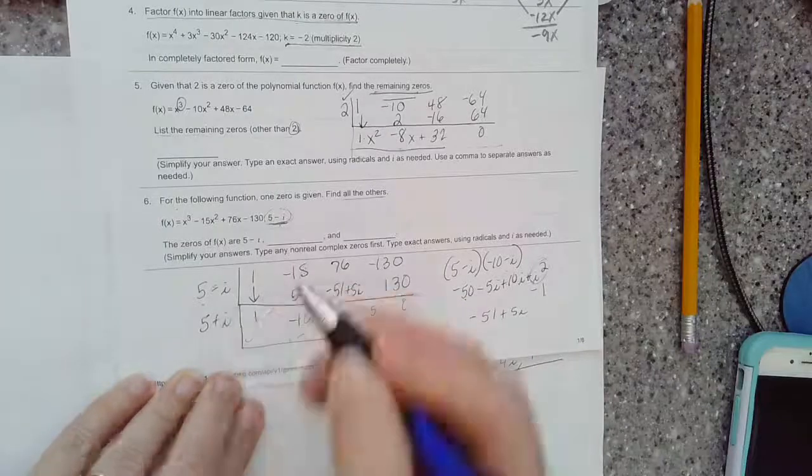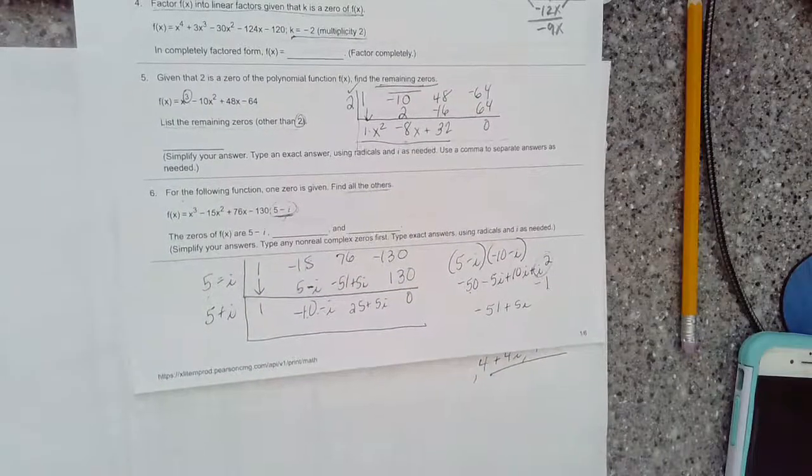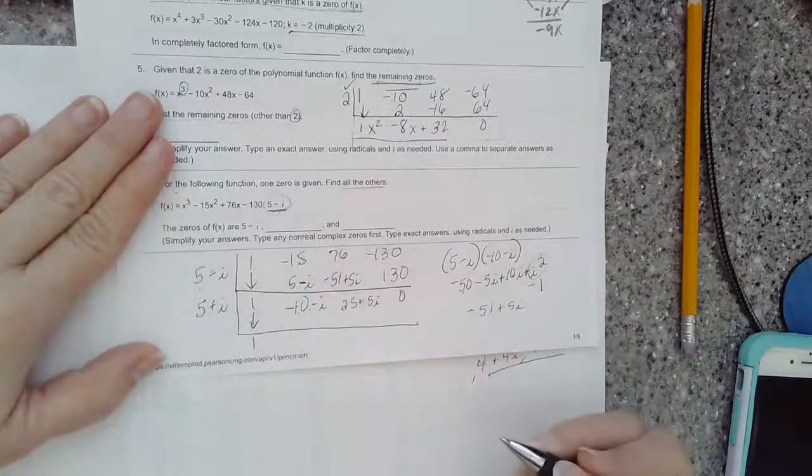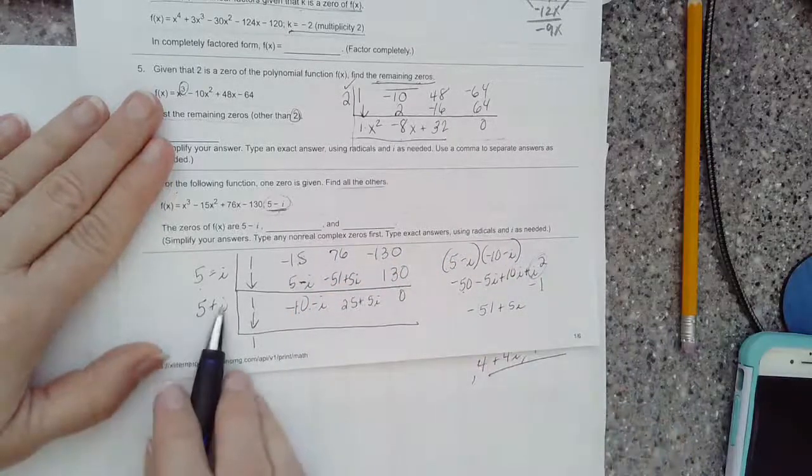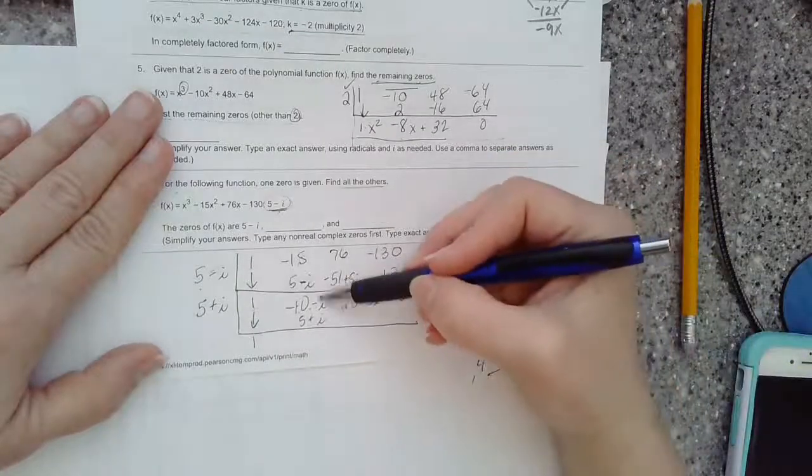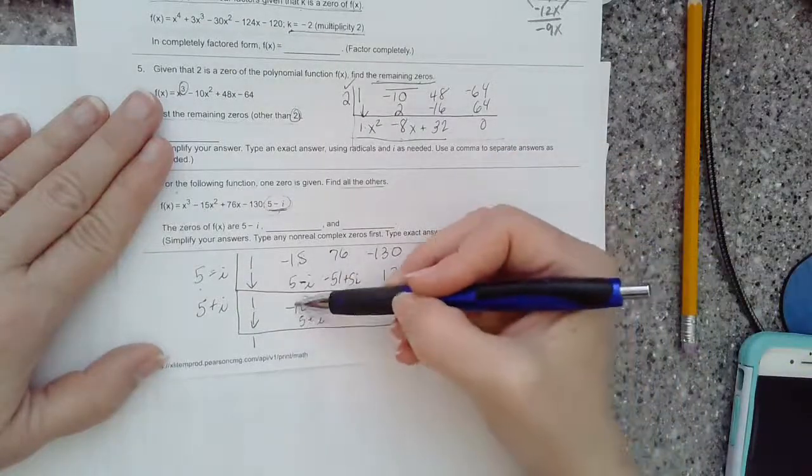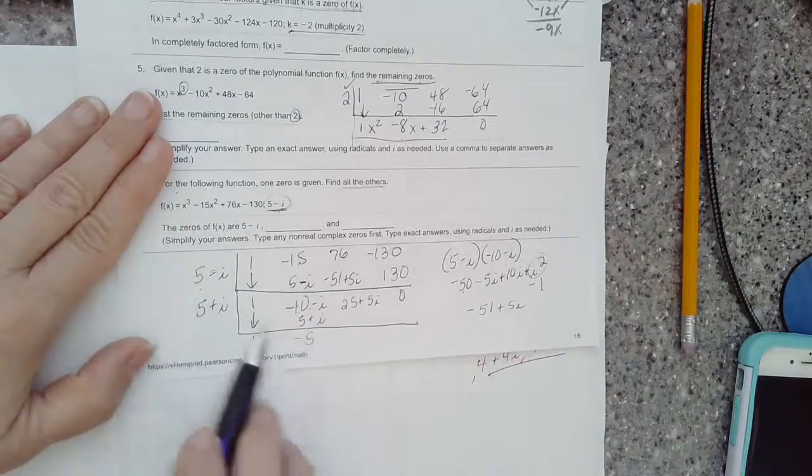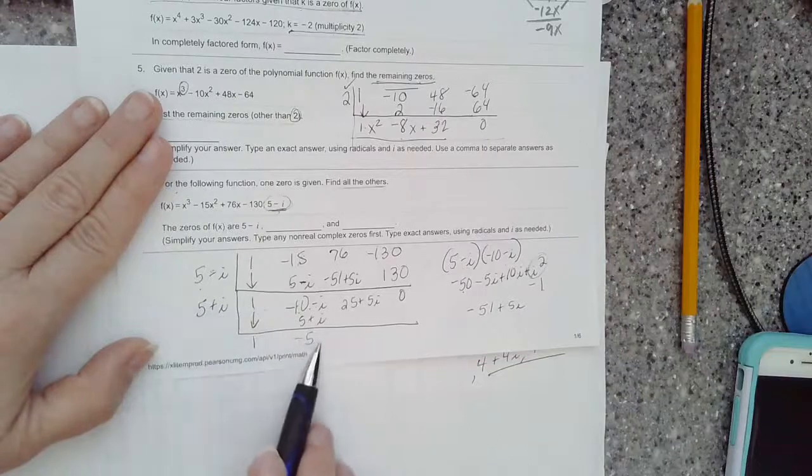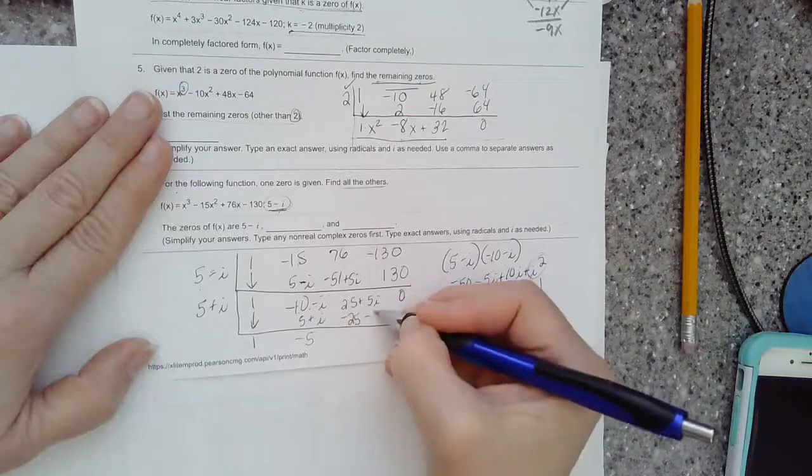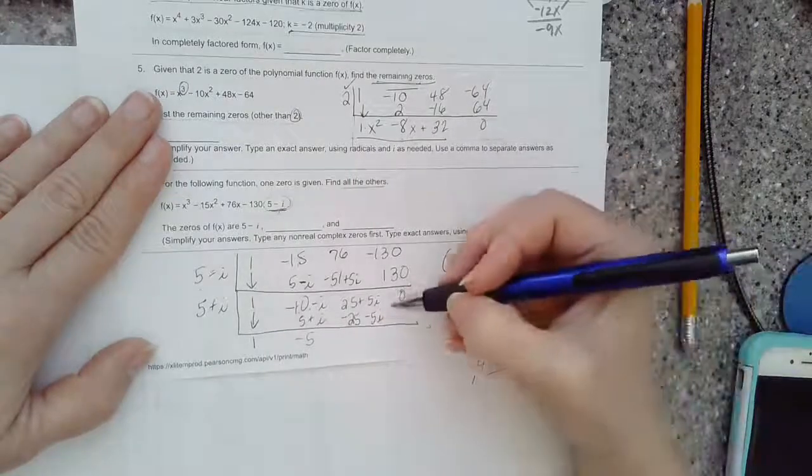So we use that conjugate theorem to keep this going. Now we divide again, knowing that this should give us a zero remainder. 5 plus i times 1, 5 plus i. This time when I add, notice the i's will drop out. Then when I multiply, it's negative 5 times each of those, making negative 25 and negative 5i, and then like we hoped would be a zero remainder.